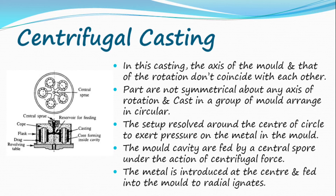Centrifugal casting: in this casting, the axis of the mold and that of the rotation don't coincide with each other. Parts are not symmetrical about any axis of rotation and are cast in a group of molds arranged in a circle. The setup revolves around the center of the circle to exert pressure on the metal and the mold. The mold cavities are fed by a central sprue under the action of centrifugal force. The metal is introduced at the center and fed into the mold through radial gates.